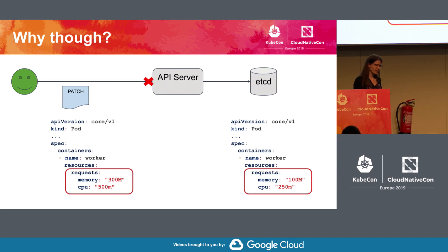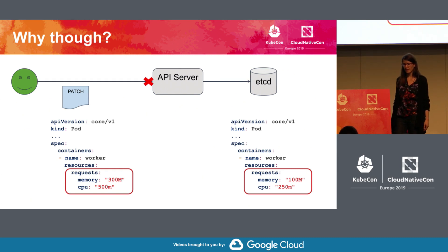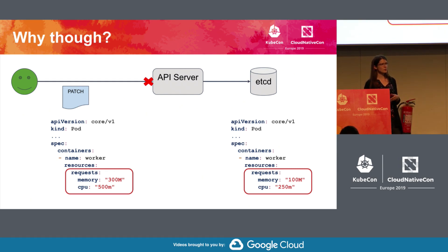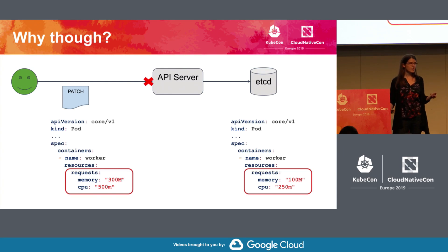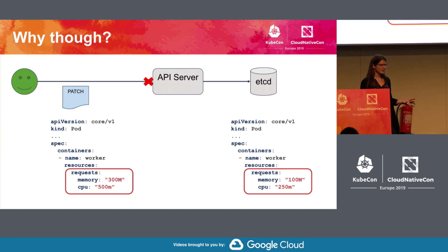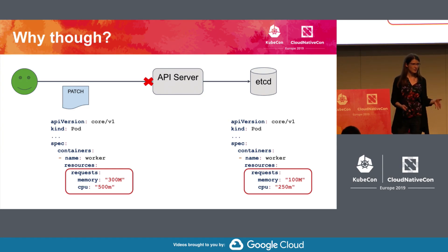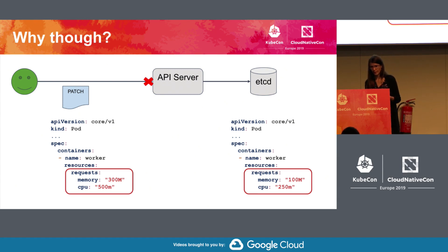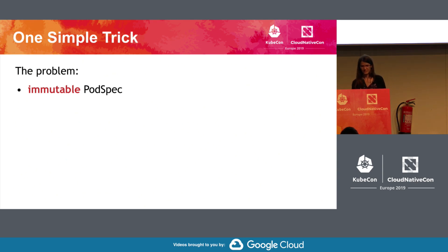This has very significant consequences, both for VPA and for any other actors that want to resize pods. For example, there are several types of workloads that it makes absolutely no sense to resize because the resize means a restart. Take a long-running batch job that has no way of snapshotting itself — it runs for two hours, and then you decide its resource requests are wrong. Should you restart it and lose two hours of work, or just wait and live with out-of-date resource requests?